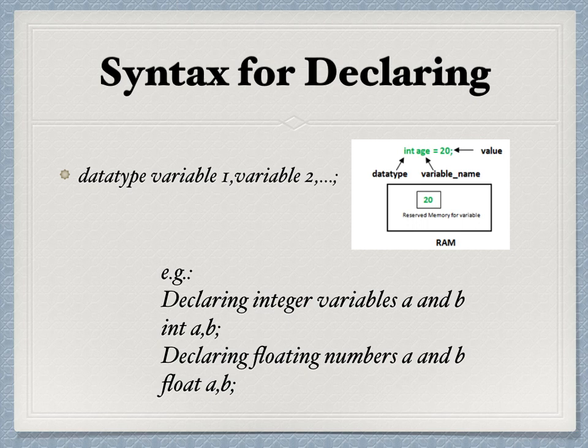In this example, int a, b means you are declaring two variables with data type integer. So totally four bytes will be reserved for the variables a and b. That is all we have for today. Thank you.